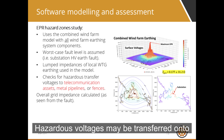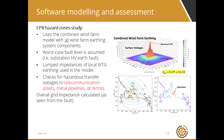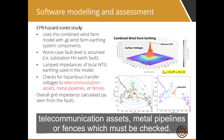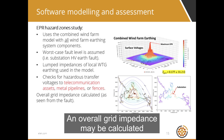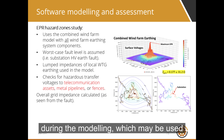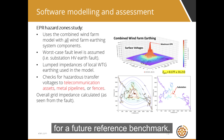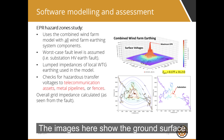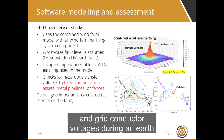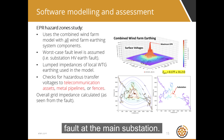Hazardous voltages may be transferred onto telecommunication assets, metal pipelines, or fences, which must be checked. An overall grid impedance may be calculated during the modeling, which may be used as a future reference benchmark. The images here show the ground surface and grid conductor voltages during an earth fault at the main substation.